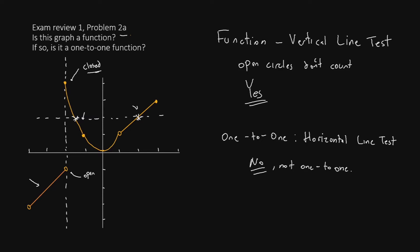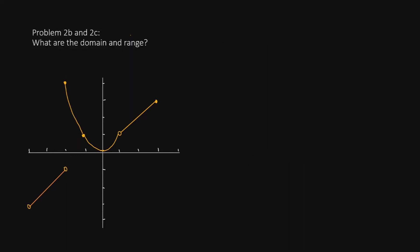That answers part 2a. Now for part 2b and 2c: what are the domain and range? If we're going to write the domain, we are going to check the x values, and we'll start by drawing a number line.